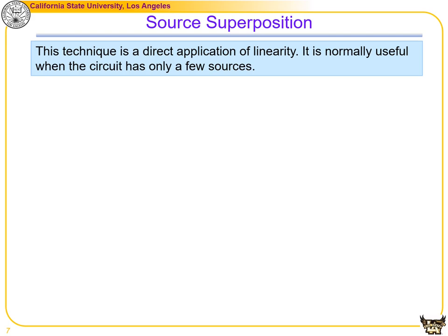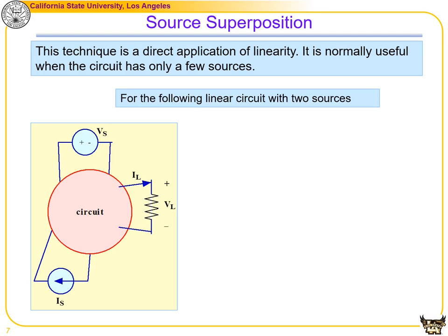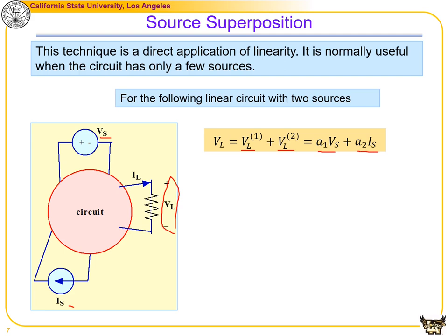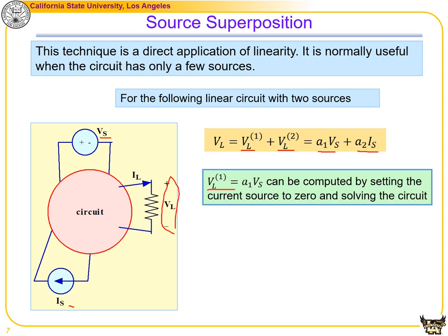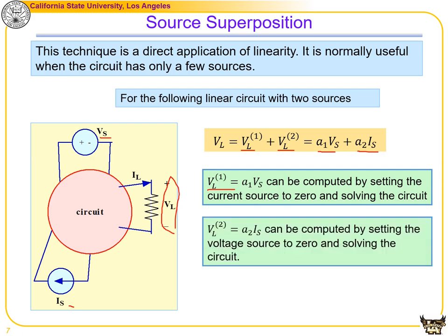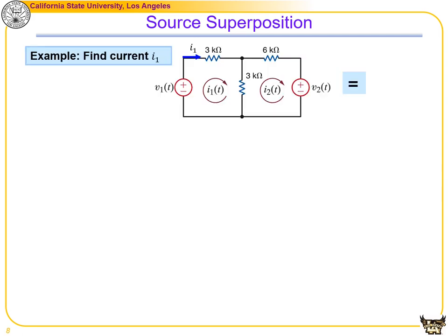Superposition is a direct application of linearity, normally useful when a circuit has only a few sources. For example, with power supplies Vs and Is, the output Vl equals the sum of two parts: one caused by Vs and the other by Is. To find the first part, set the current source to zero; to find the second part, set the voltage source to zero.